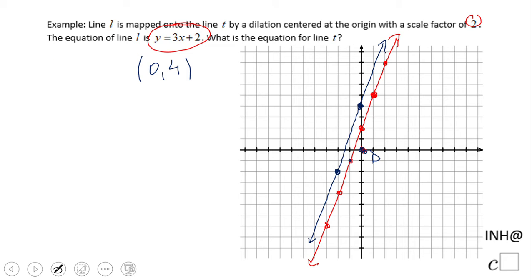Right, so the slope of this line will also be 3. So what is the equation of the line that has a slope of 3 and a y-intercept of 4? That's it.